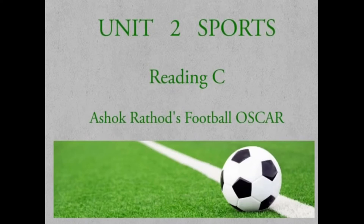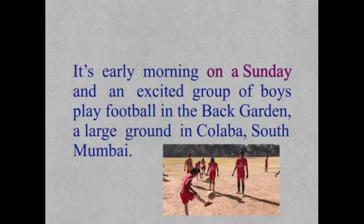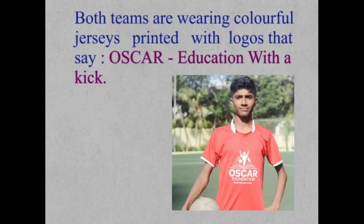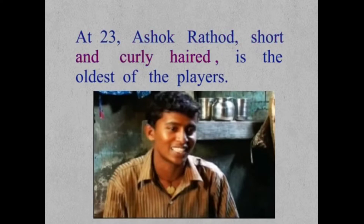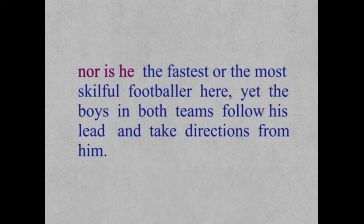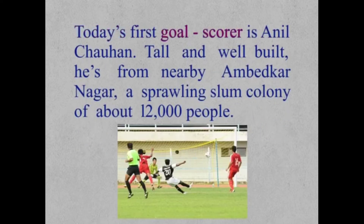Unit 2, Sports, Reading C: Ashok Rathod's Football Oscar. It's early morning on a Sunday and an excited group of boys play football in the back garden, a large ground in Kolaba, South Mumbai. Both teams are wearing colorful jerseys printed with logos that say Oscar Education. Ashok Rathod, short and curly-haired, is the oldest of the players, yelling instructions on how to kick or pass and egging the others on.